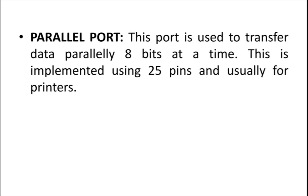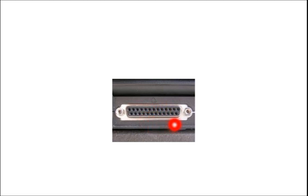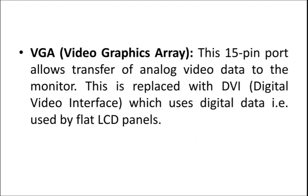Next is the Parallel port. In the serial port, only 1 bit can be used at a time. But the parallel port can transfer multiple bits at a time. The parallel port uses 25 pins and can be used to connect a printer. The key difference: serial port transfers bit by bit, while parallel port transfers multiple bits simultaneously.